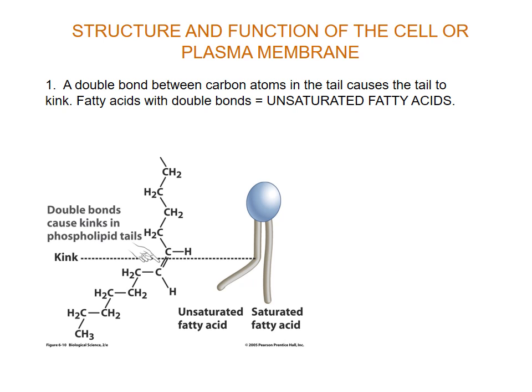Let's have a look at what this looks like. When we have a double bond between the carbon atoms, we get a kink in the tail. So we have a saturated and an unsaturated fatty acid shown here. Remember, the more unsaturated fatty acids in the cell membrane, the greater the permeability.